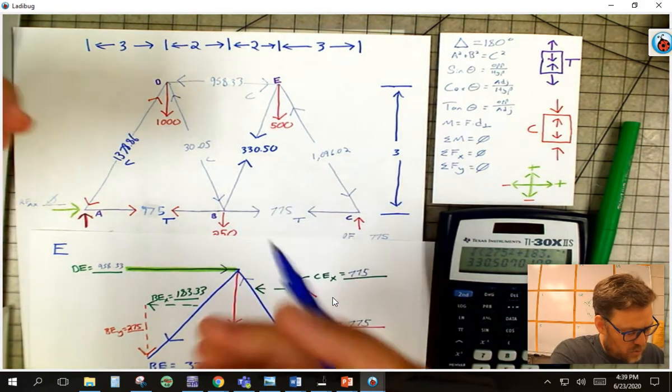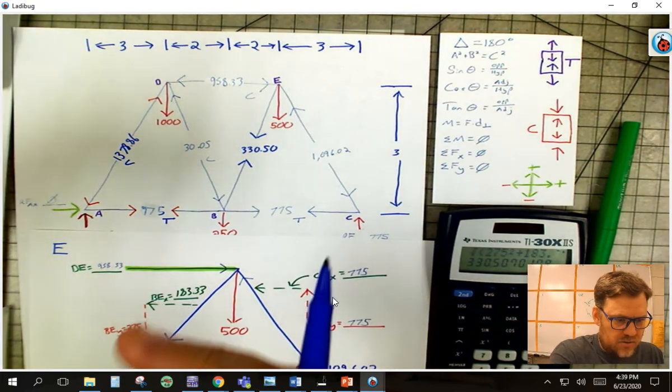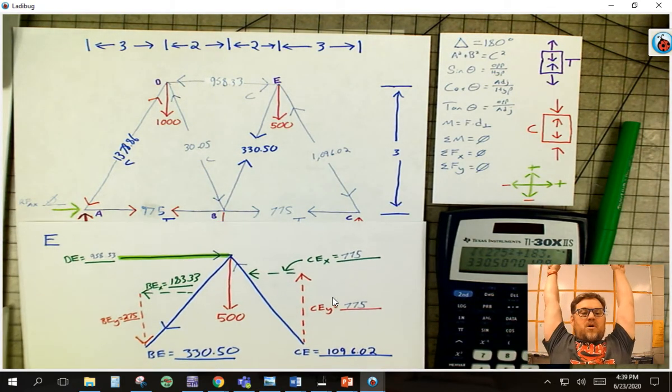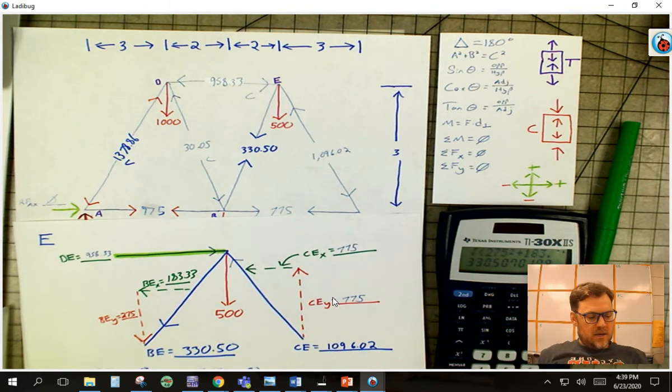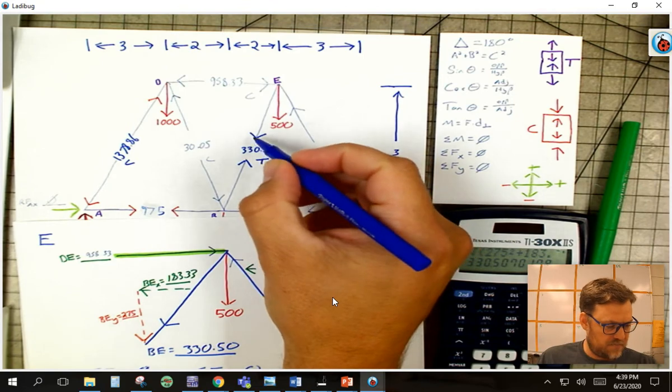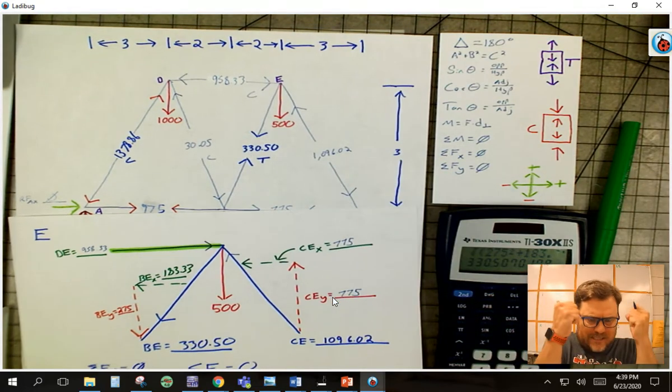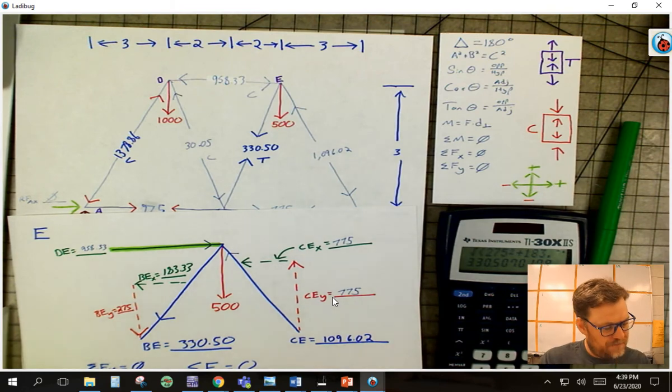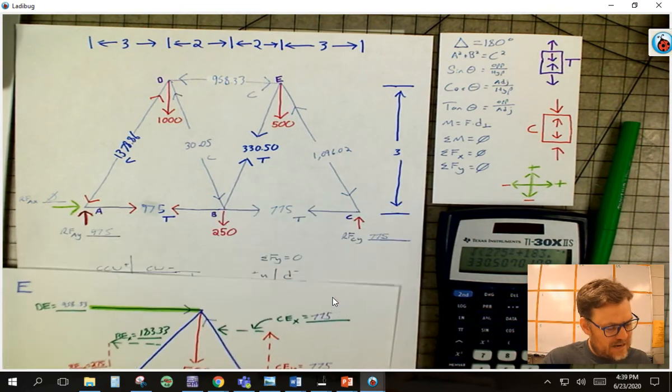Well, those internal forces are pointing to each other. So think about Braveheart. And when he's up on the rack and he's getting stretched apart, what is he doing? He's trying to pull in. So this guy's in tension. Okay. This guy's in tension because this member is trying to slink in. It's trying to pull because it's being pulled apart.